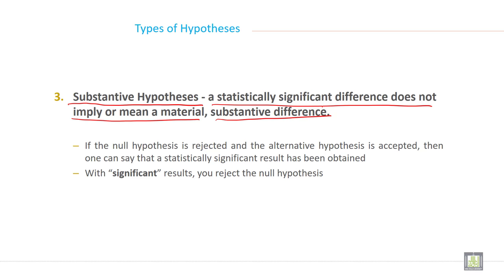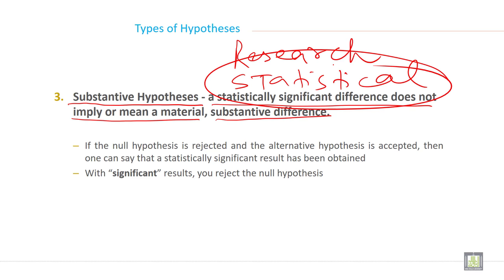But the more common types are research hypothesis and statistical hypothesis. So just focus on research and statistical hypothesis. Here I will explain only statistical hypothesis in this series of lectures. You can review the latter part.